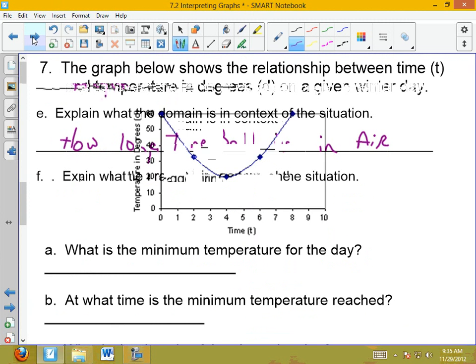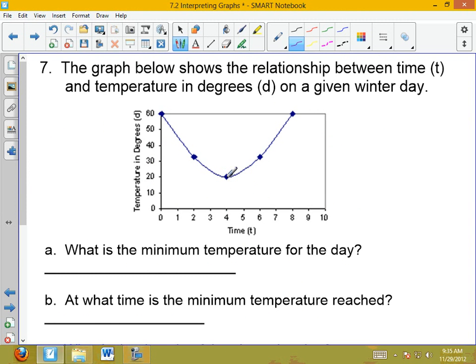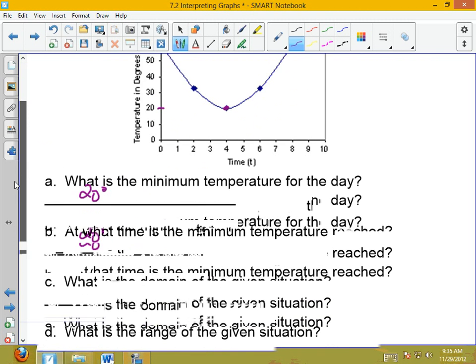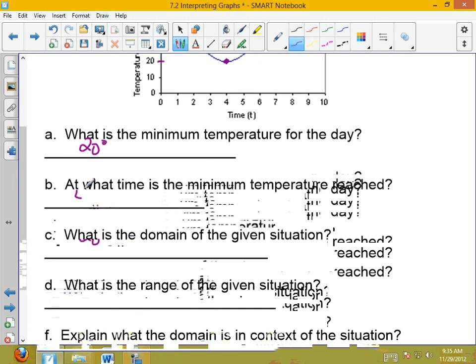This one's the same thing. Let's look at number seven. This is talking about temperature. This is still a parabola, but it now has a minimum point. What is the minimum temperature of the day? Well, if I look over here, it's 20 degrees. So, I have to be told degrees, or it's wrong. At what time did the minimum temperature get reached? Four. I don't know if it's a.m. or p.m. I just put four.